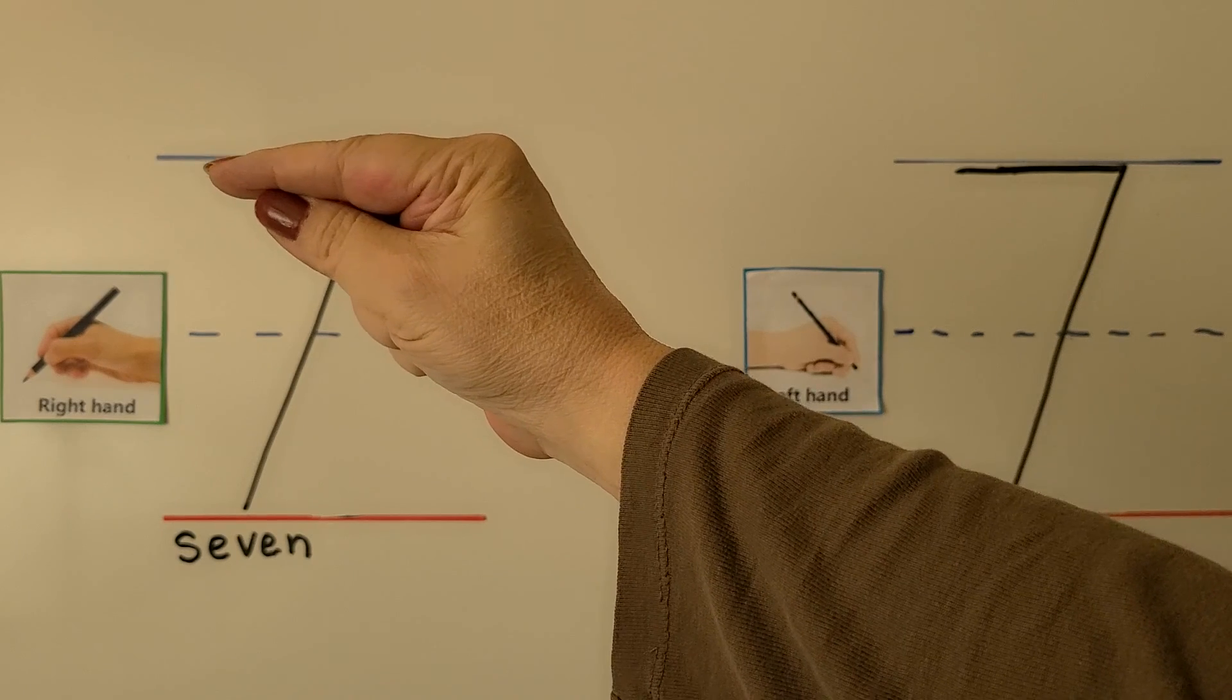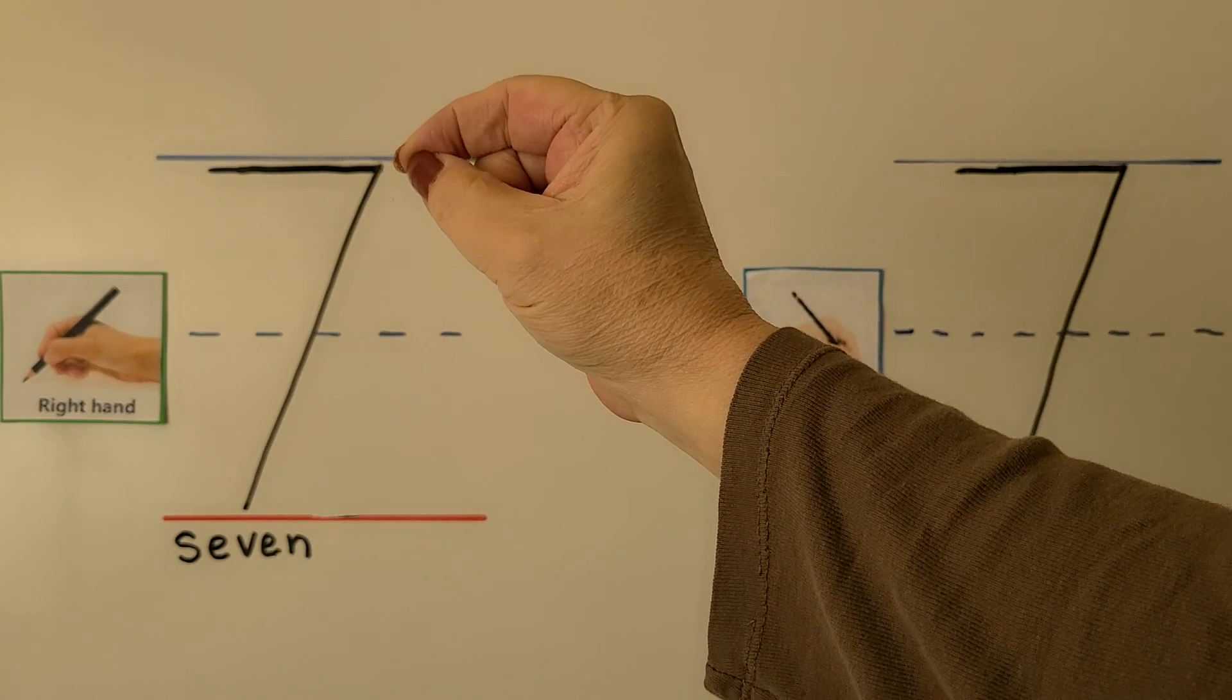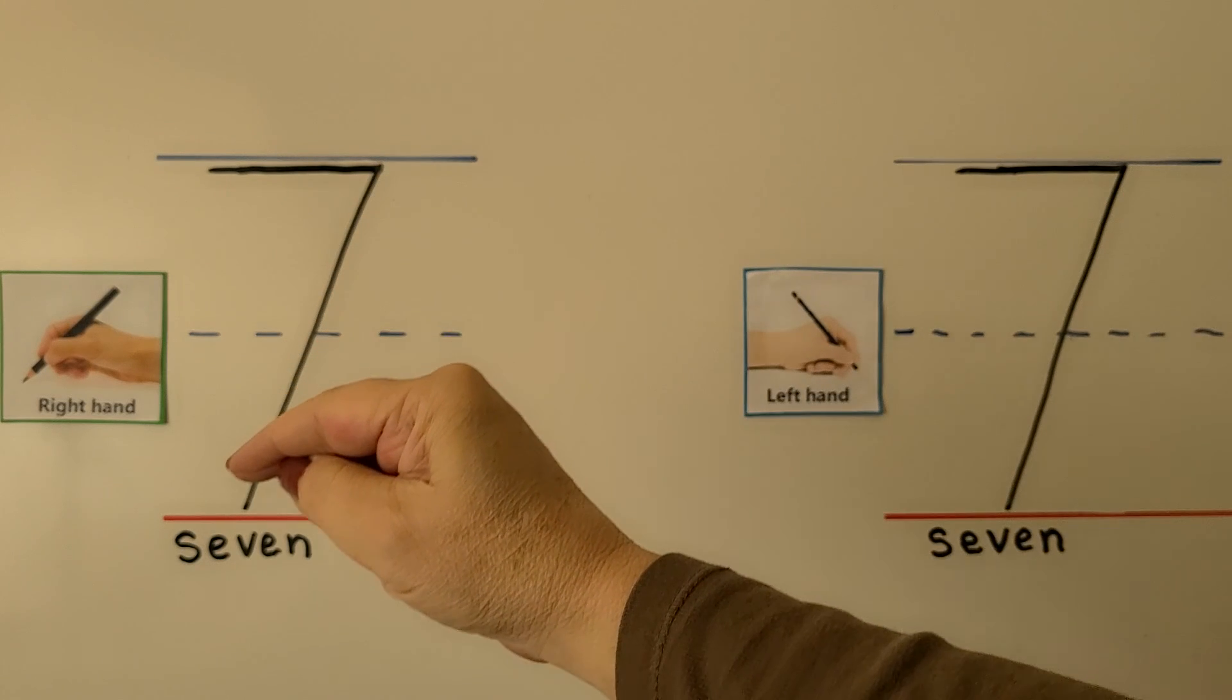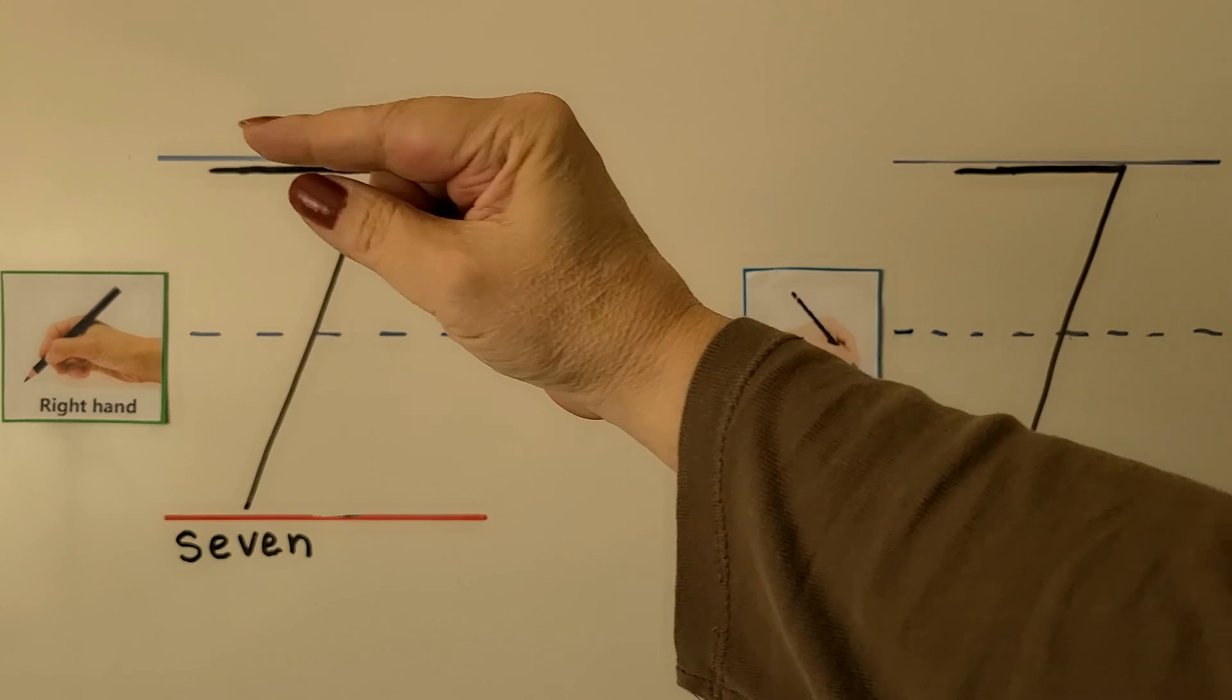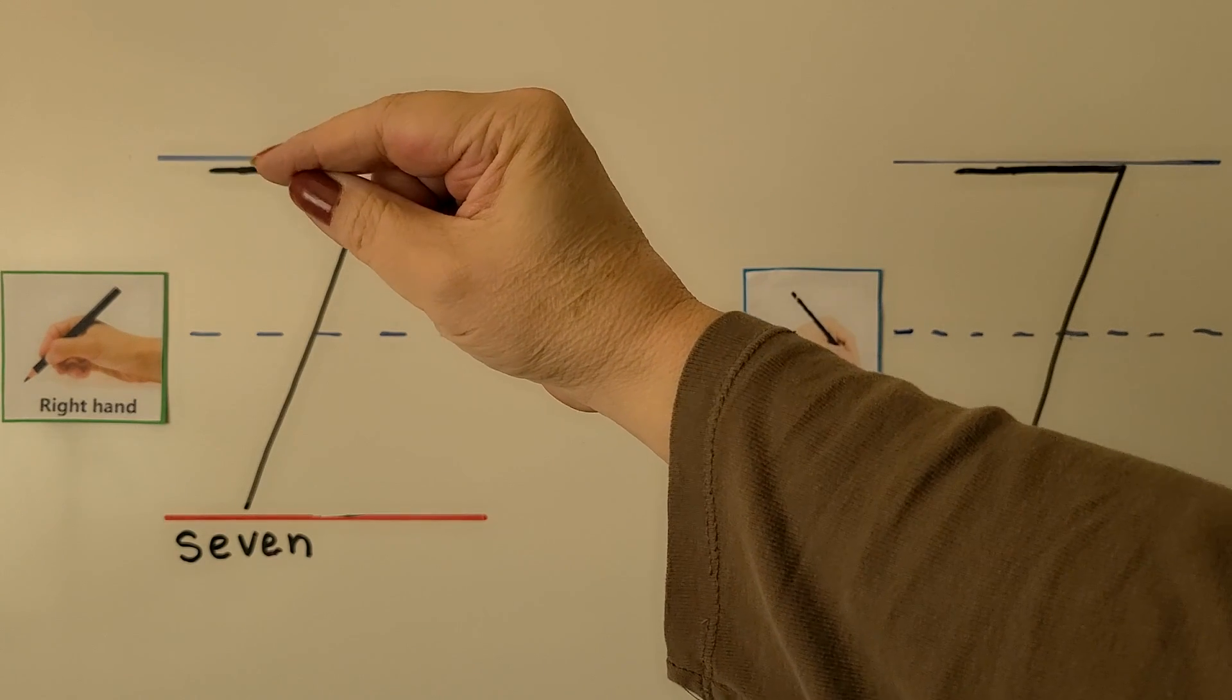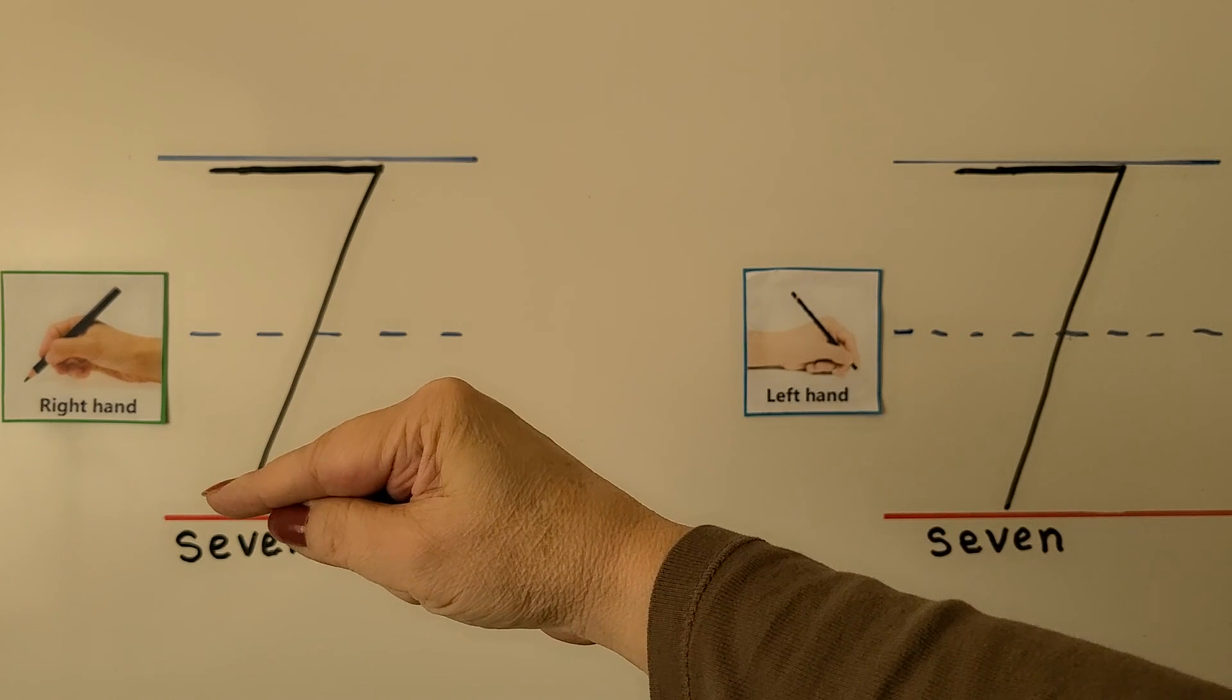We start right here and we pull our finger towards us. Then we come down in a slant going away from us. Let's try it again. We start here. We pull towards our hand. Then we go down in a slant away from our hand.